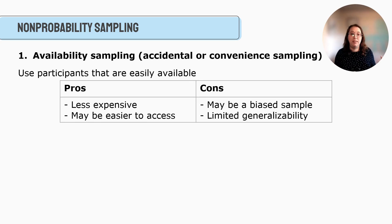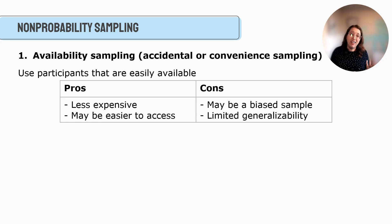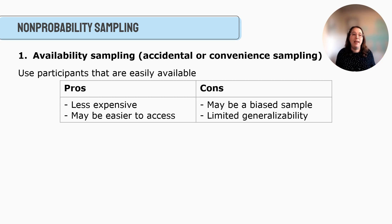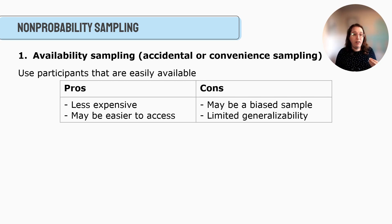One practical advantage of availability sampling is cost — getting a list of all registered nurses or social workers in a community can require payment. With availability sampling, you have the people right there. But the cons are significant: it can produce a biased sample depending on who and how you interview, and it has limited generalizability. If you only interview a few people on a street corner, you can't really claim that's representative of the whole community.